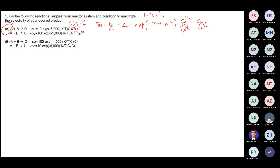So how about CB? CB is negative one-half. Thank you very much. So CB is negative one-half. When it's negative, we bring it to the top, so it becomes CB to the power of negative one-half.